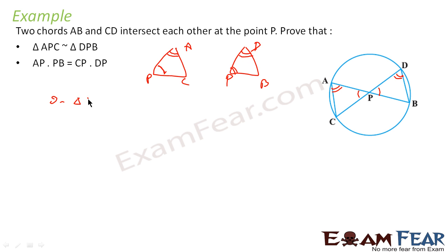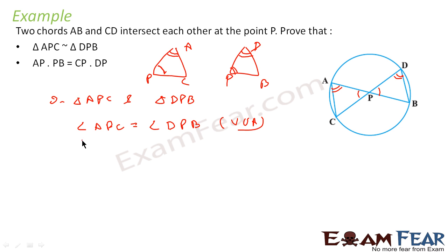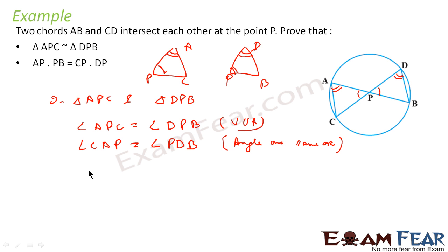So we can say that in triangle APC and triangle DPB: angle APC is equal to angle DPB — vertical opposite angles. Angle CAP is equal to angle BDP — angles on the same arc. Therefore, triangle APC is similar to triangle DPB.